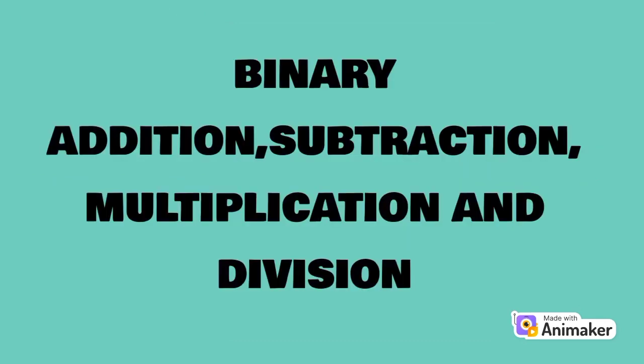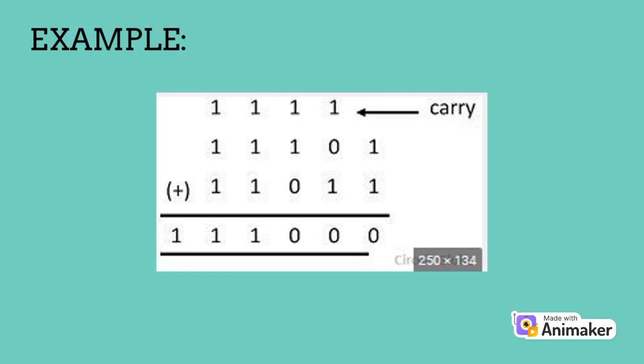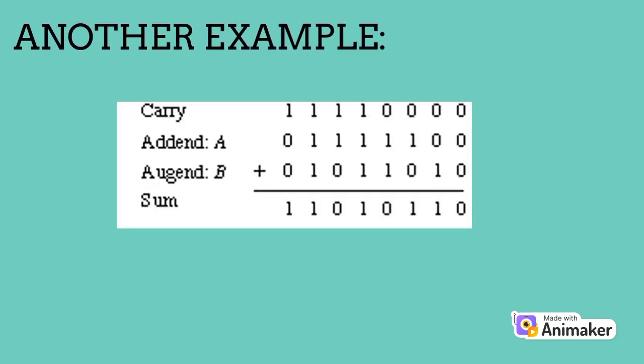Binary addition, subtraction, multiplication, and division. Binary addition rules: 0 plus 0 equals 0; 0 plus 1 equals 1; 1 plus 0 equals 1; 1 plus 1 equals 10 — carry 1 to the next significant bit; 1 plus 1 plus 1 equals 11 — carry 1 to the next significant bit. Here is an example and another example showing binary addition.